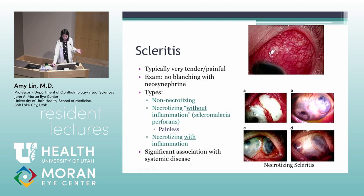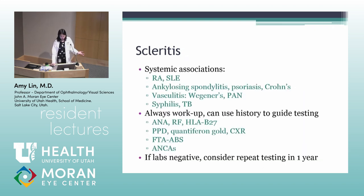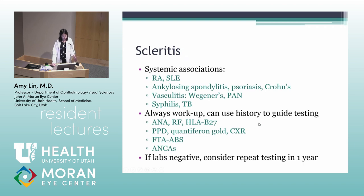Systemic associations with scleritis include rheumatoid arthritis, lupus, ankylosing spondylitis, psoriasis, Crohn's, vasculitides, syphilis, and TB. With scleritis, always work it up even for a first-time episode, using history to guide testing; if labs are negative, consider repeat testing in one year. Non-necrotizing scleritis shows a violaceous hue, has a 50% association with systemic disease, 50% of cases are bilateral, and does not self-resolve without treatment. Scleromalacia perforans is painless, presents as a quiet eye with thin sclera in the elderly, is typically bilateral, and 50% of cases are from rheumatoid arthritis — scleral rupture is rare and rarely needs surgical repair.